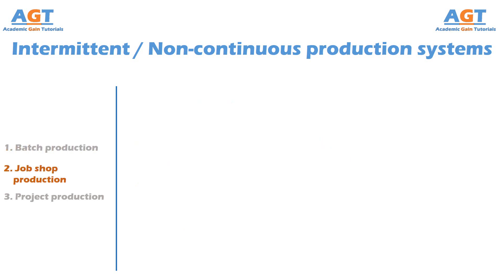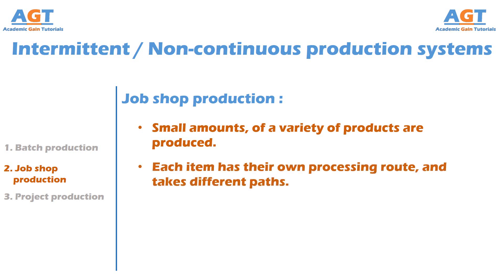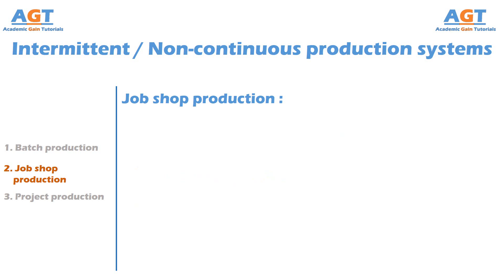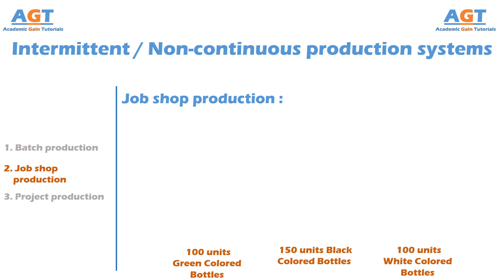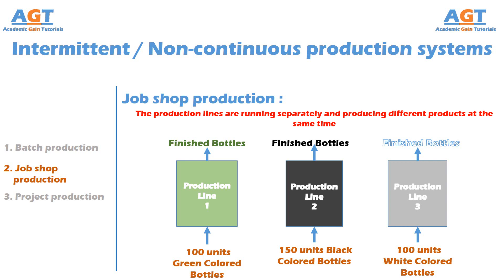Another type of intermittent production system is job shop production. A job shop is a type of production system in which a small amount of a variety of products are produced. Each item has its own processing route and takes different paths. Non-standardized products of high variety are produced in low volume in a job shop production system. For example, 100 units of green colored bottles, 150 units of black colored bottles, and 100 units of white colored bottles are running through production at the same time on separate production lines within the same facility, so that finished bottles of three different colors are obtained separately from the three production lines simultaneously.